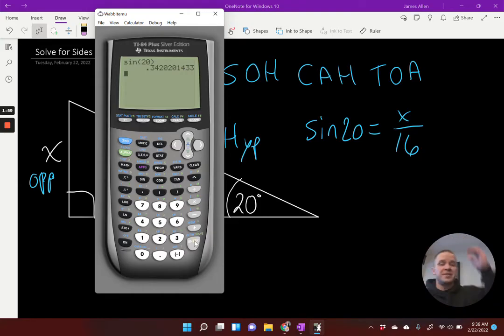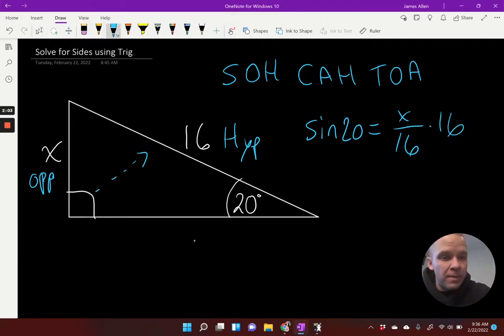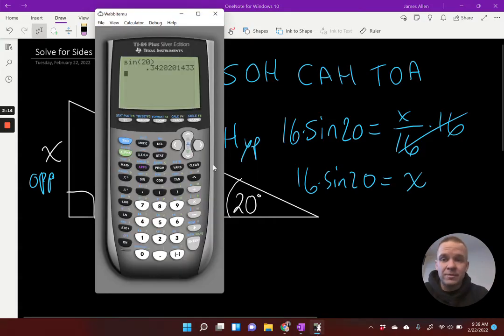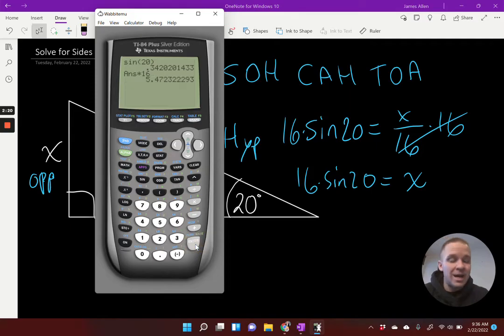So if I have a number equals x divided by a number, how do I solve for x? Well, algebraically, I would multiply by 16 on both sides. And now I'd have 16 times the sine of 20 equals x. So let's go back to our calculator and type that in. You can either hit multiply by 16 right now. Hit enter. Or you can type it all in at once, 16 times sine of 20. Close my parentheses, hit enter. See, same thing. 5.47.